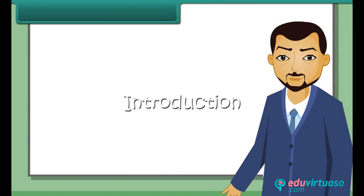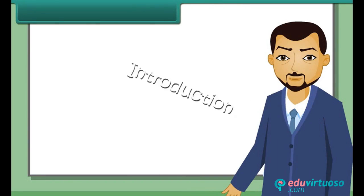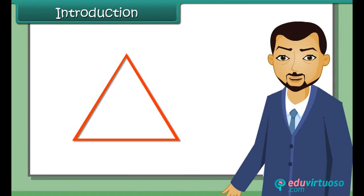We have seen that a triangle has six parts: three sides and three angles. But to construct a triangle, you need to know only three parts. So we can construct a triangle using the SAS, ASA, SSS, and RHS axioms.